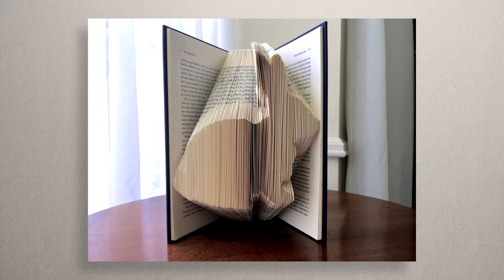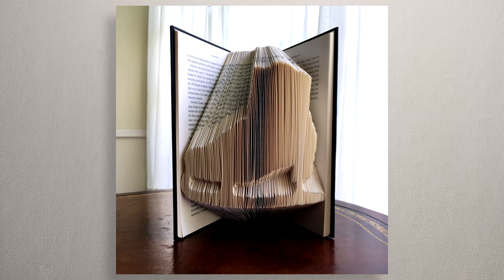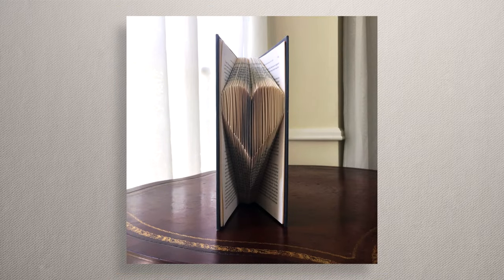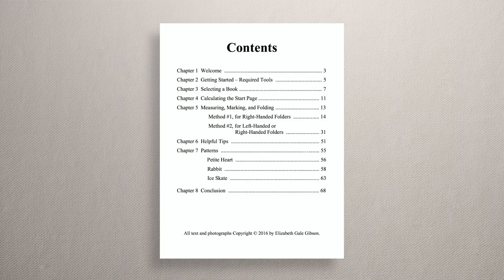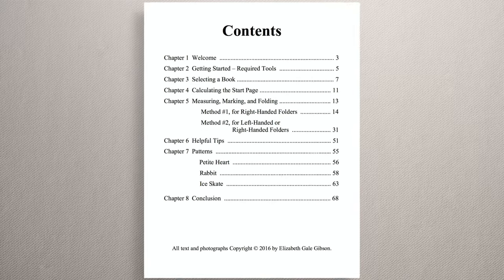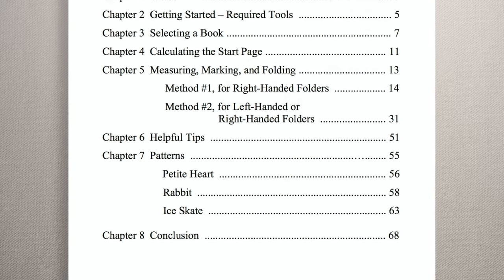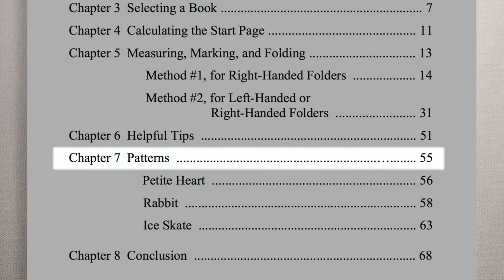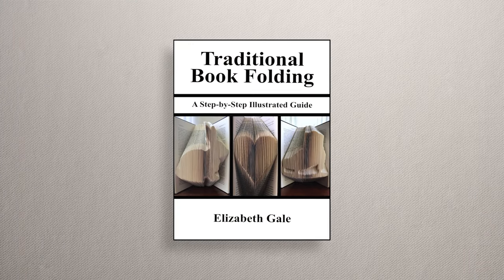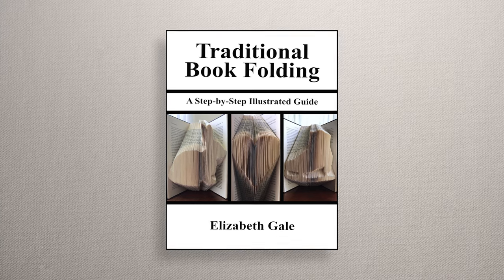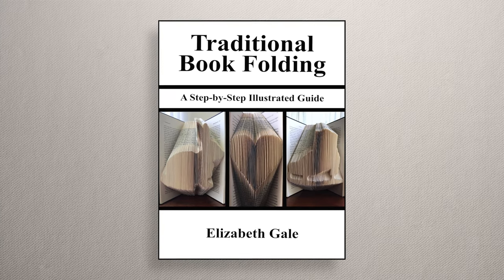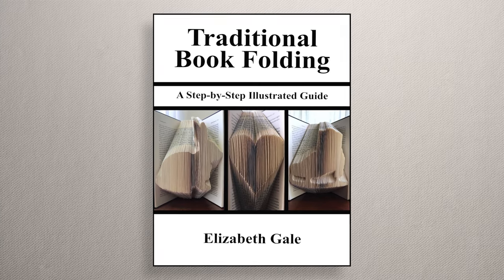The guide also has three patterns in it for you to fold. There's a cute rabbit, a fun ice skate, and a sweet petite heart. To go straight to the patterns, you'll open the PDF of the guide after you download it, and then you'll scroll down to page 55. That's where the patterns begin. And remember, you get the how-to guide with the three bonus patterns in it, completely for free, along with your order of the dad pattern.